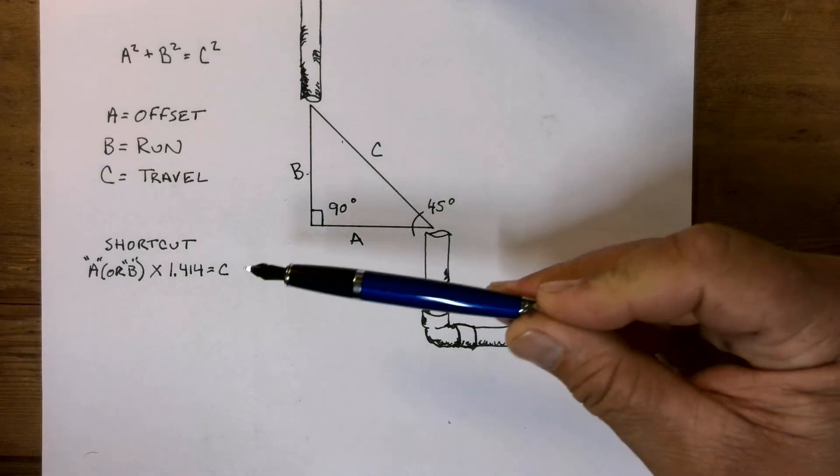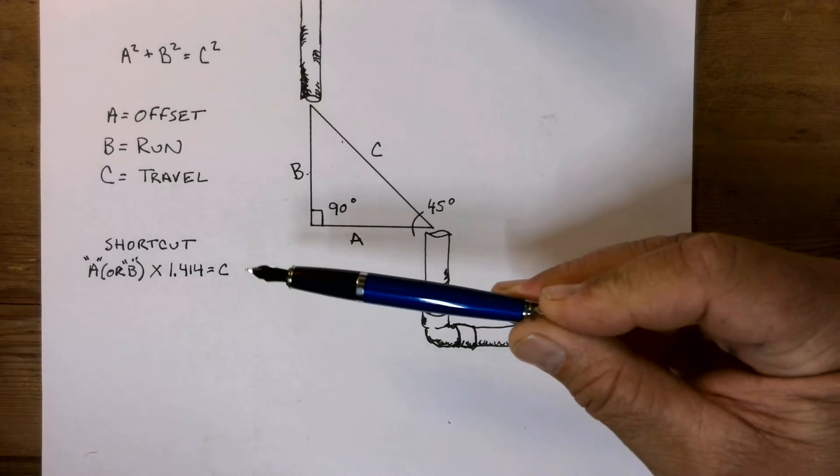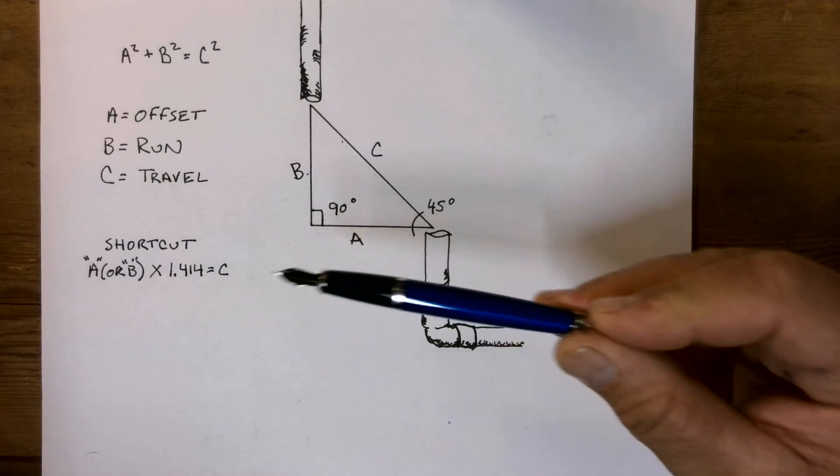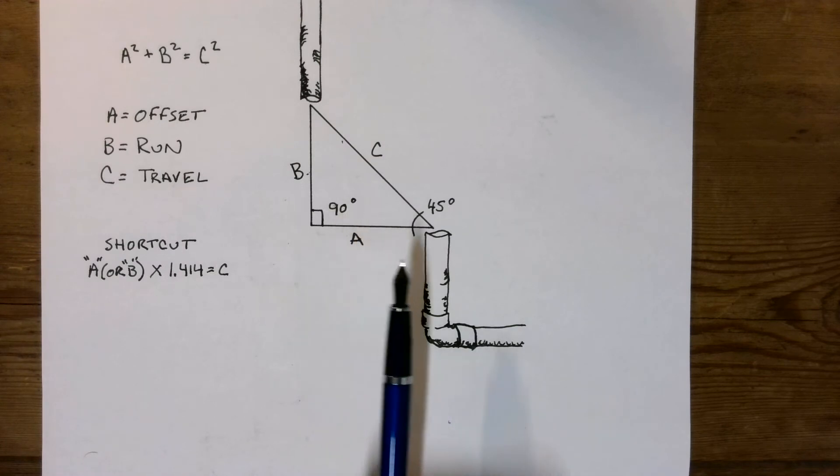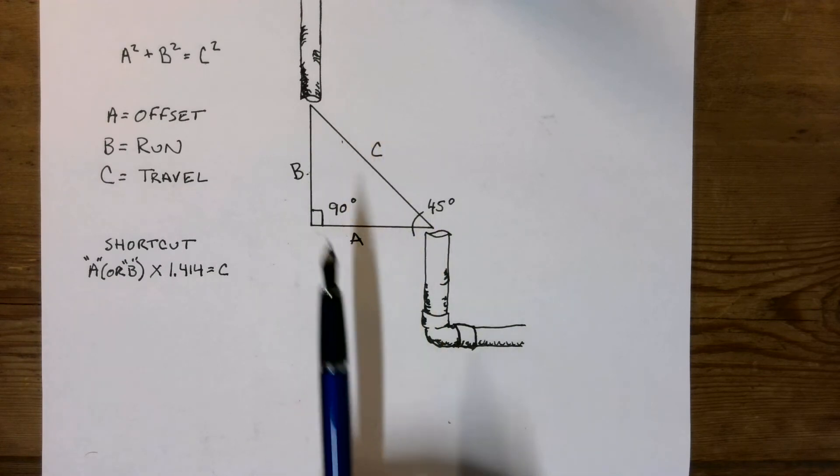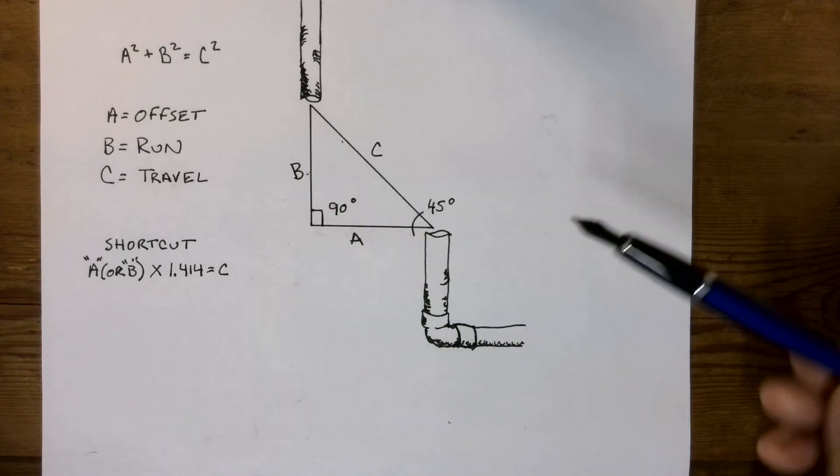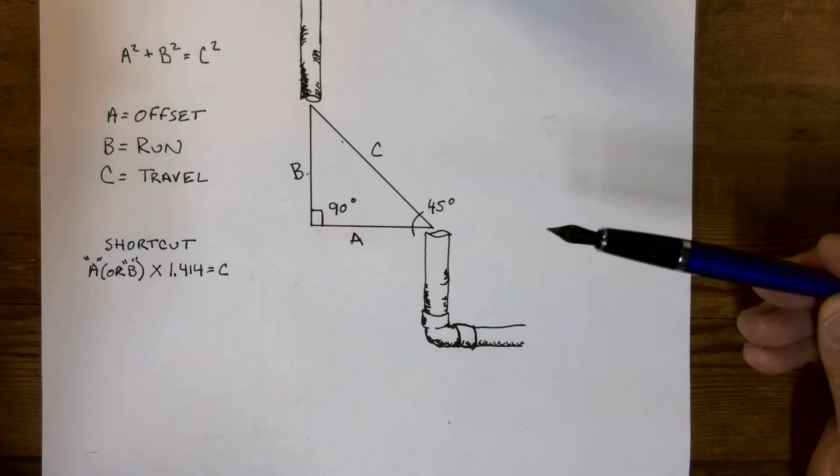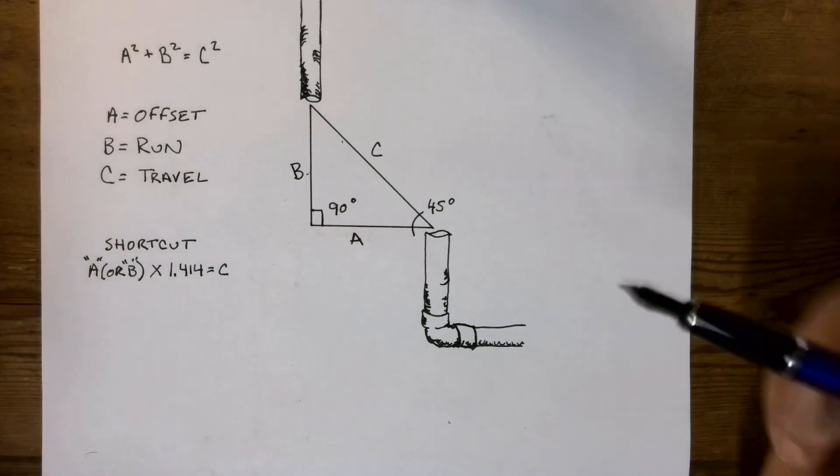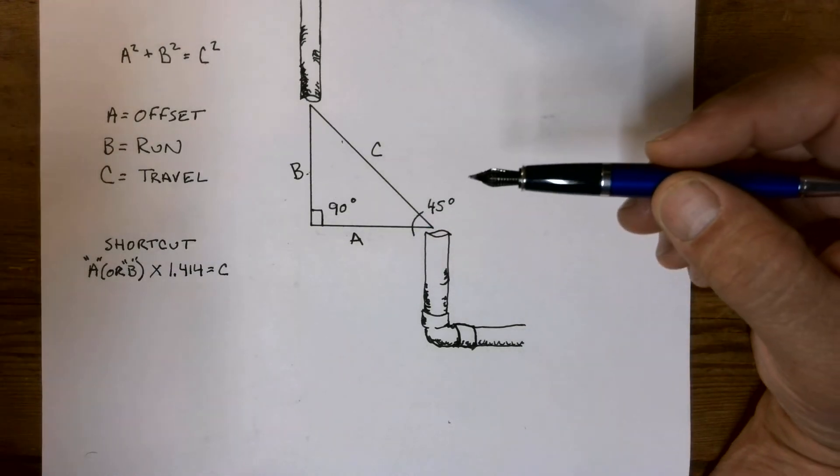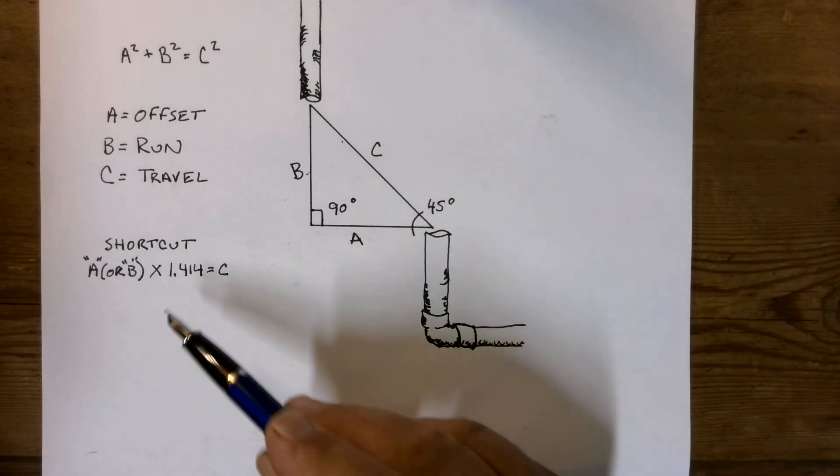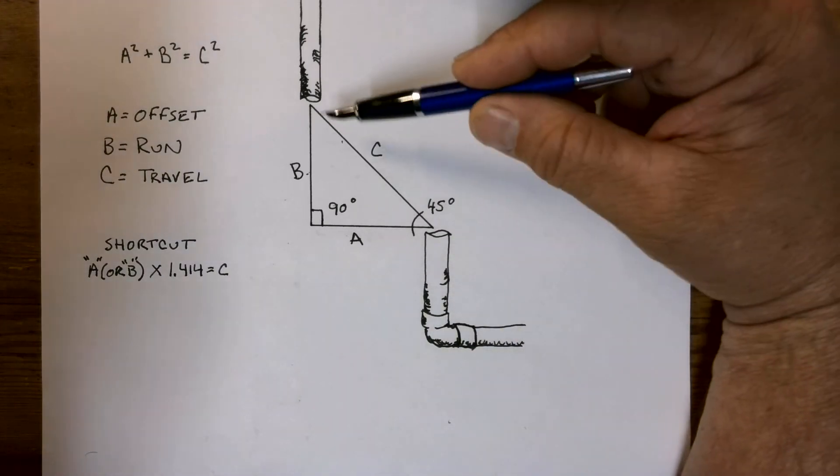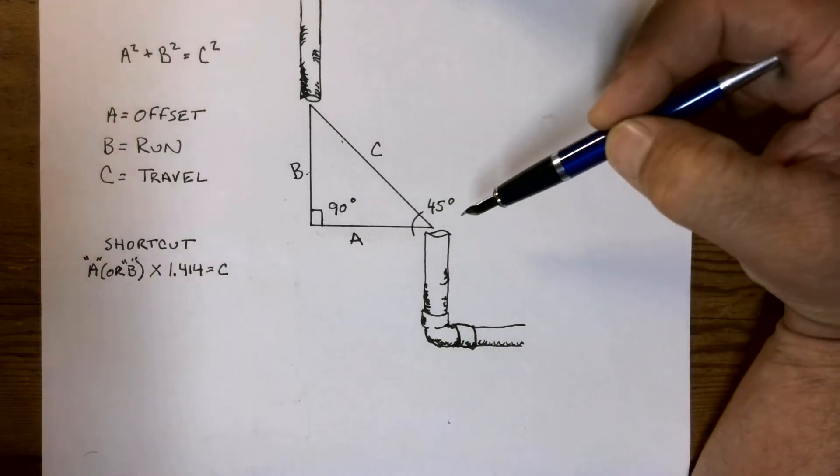Well, there's a shortcut. You take A or B and multiply it by 1.414, because with a triangle like this, where it's 90 degrees and 45 on one side and the other, both sides are mathematically equal. They have to be, or it's not a true statement. So I could take either A or B, whichever measurement I made, and multiply it by 1.414, and that gives me this distance. It gives me the travel.